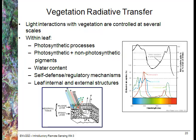Light interactions with vegetation are controlled at several scales. First, we can look at the within-leaf scale. This is controlled by photosynthetic processes, both photosynthetic and non-photosynthetic pigments, water content within the leaf, any self-defense or regulatory mechanisms including chemicals, and both leaf internal and external structures — for example, hairs on the leaf or waxy substances.